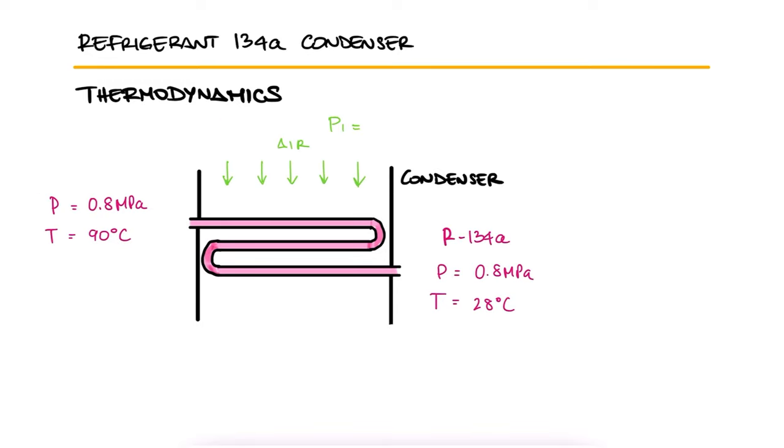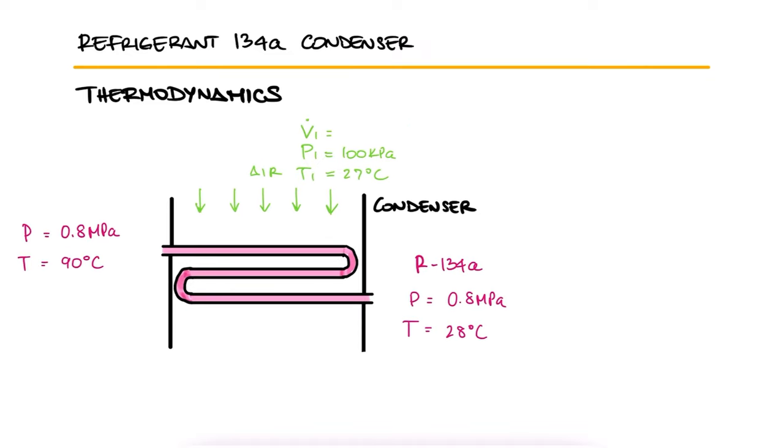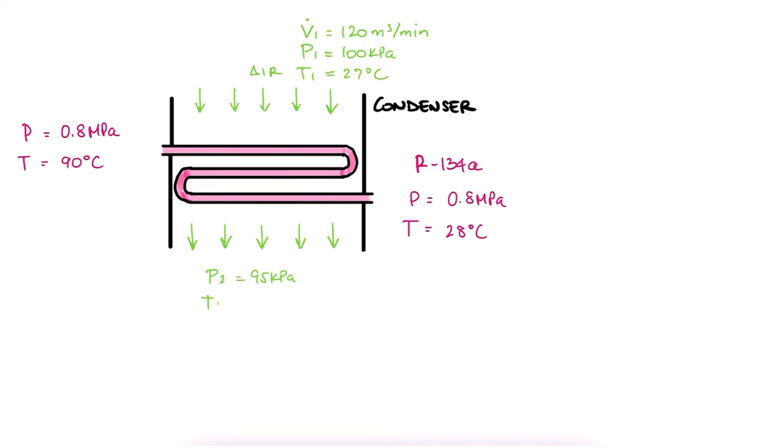The air enters at 100 kPa and 27 degrees Celsius with a volumetric flow rate of 120 cubic meters per minute and leaves at 95 kPa and 67 degrees Celsius. What is the mass flow rate of the refrigerant?